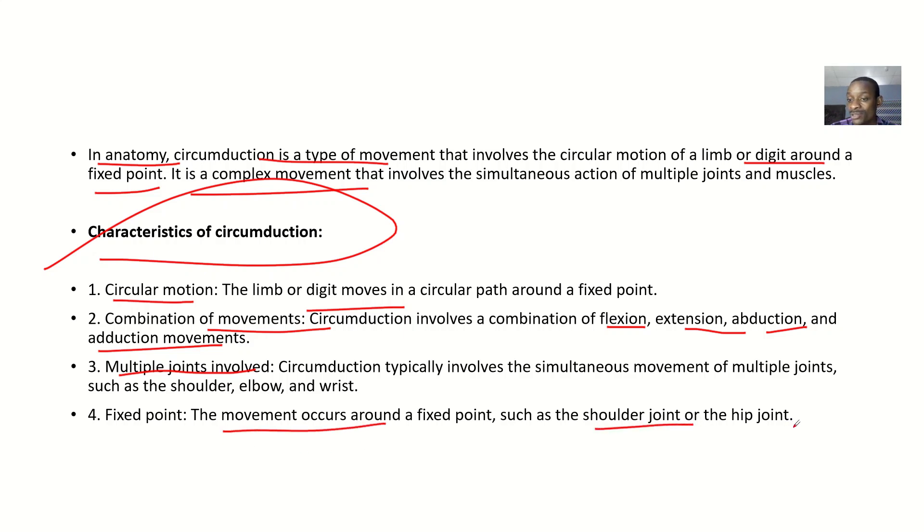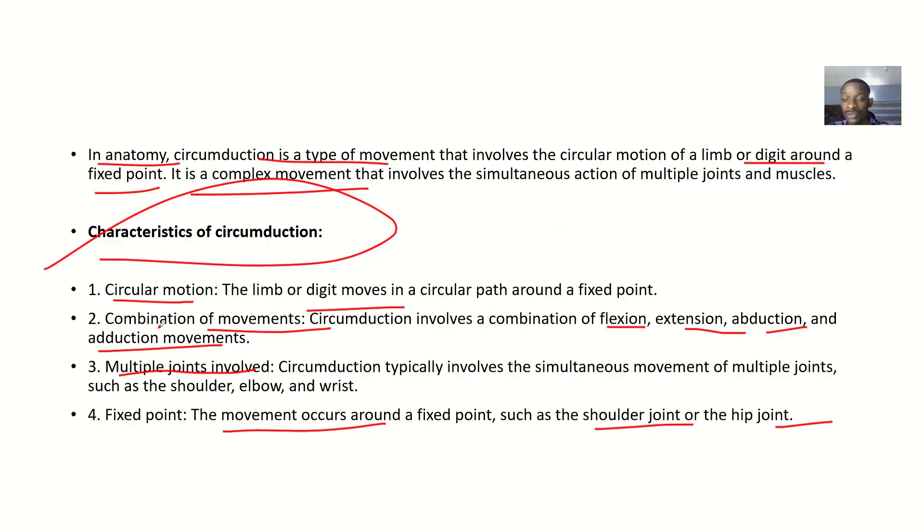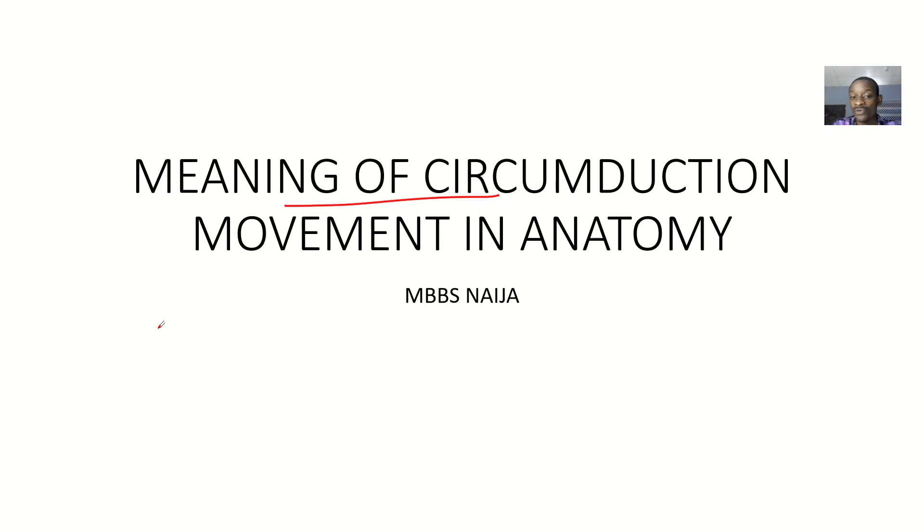Examples of circumduction include arm circumduction, finger circumduction, and hip circumduction. Circumduction is an important movement in various activities such as throwing, reaching, grasping, or walking. If you bring all this out on circumduction, you should get full marks. That's the meaning of circumduction movement in anatomy.